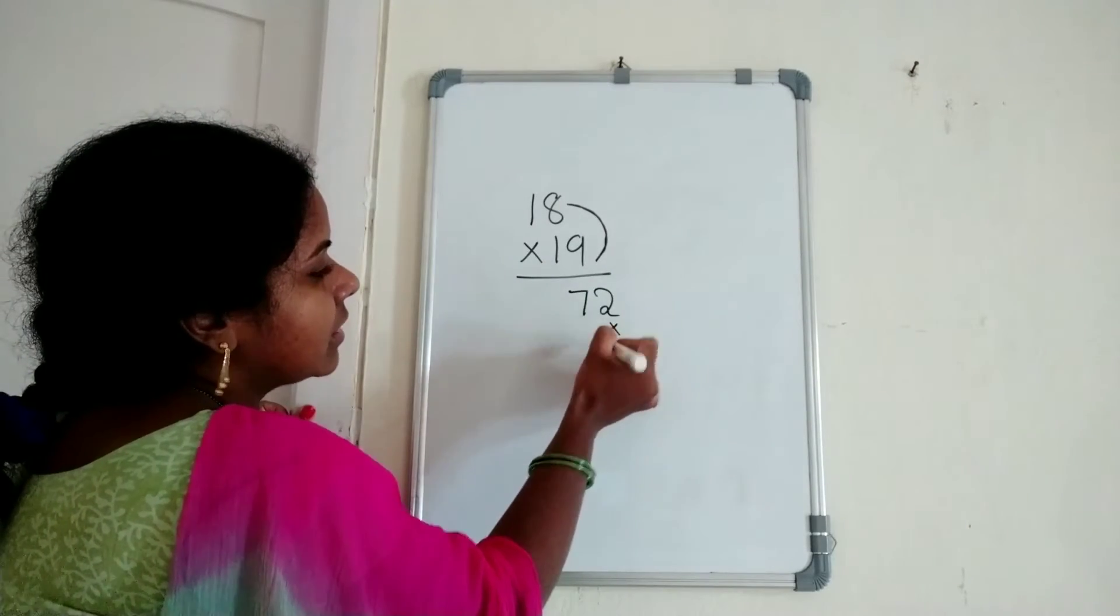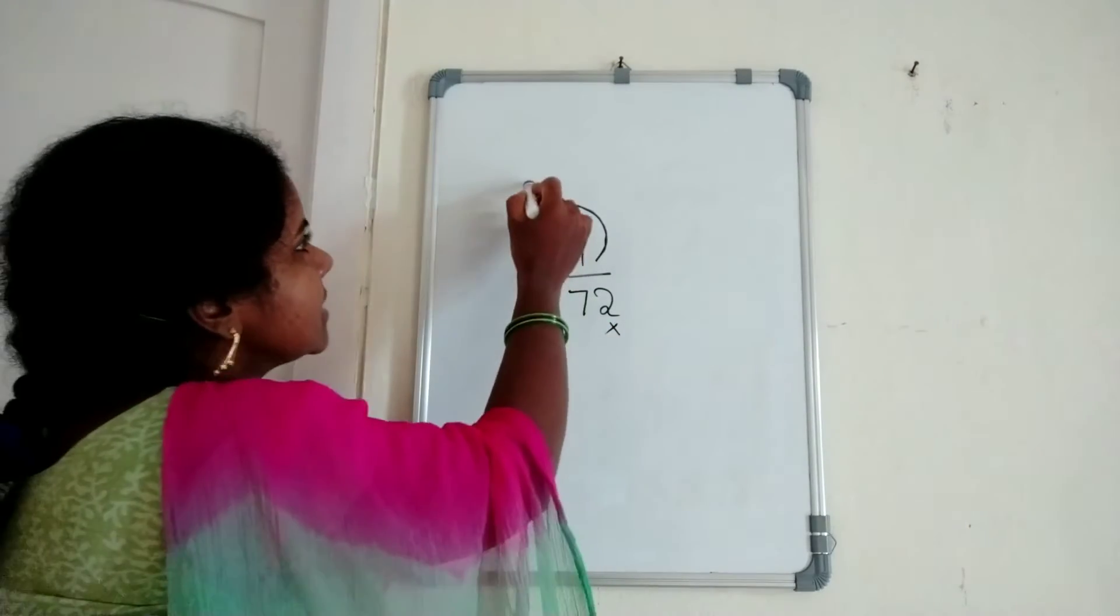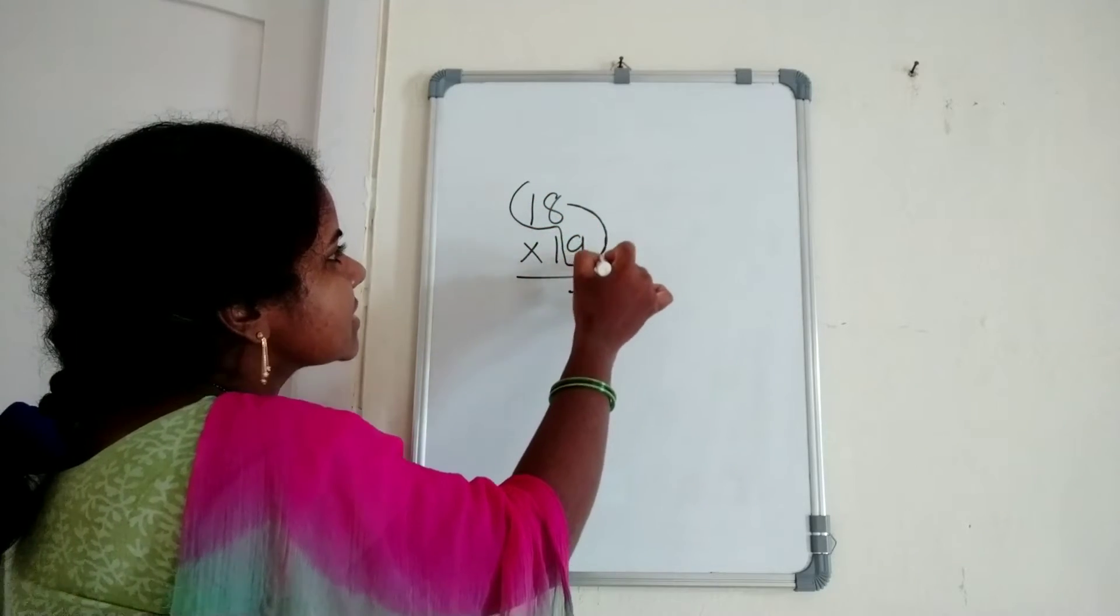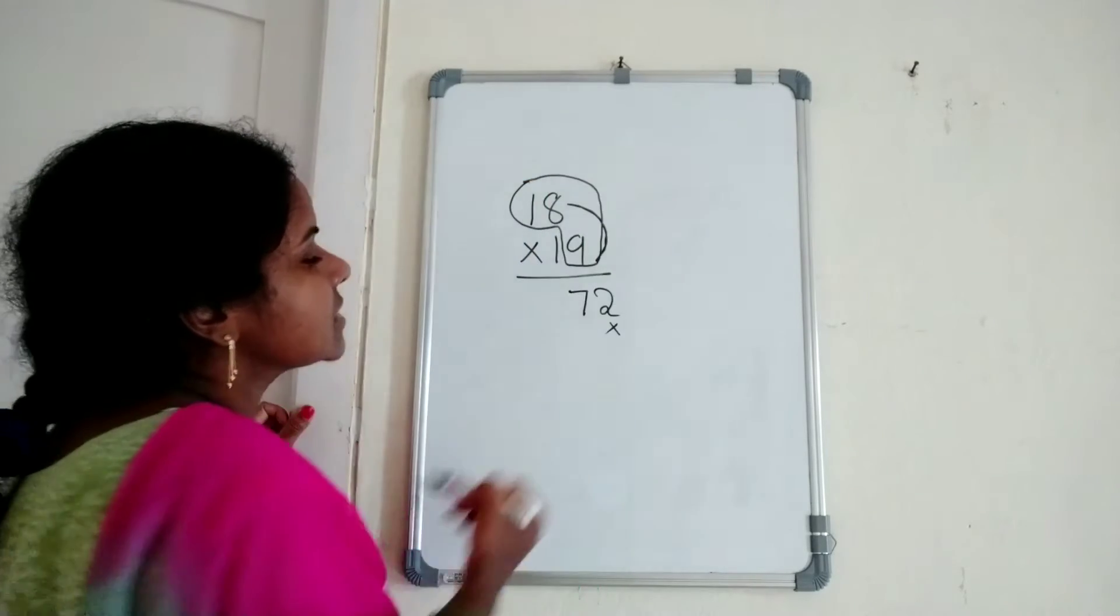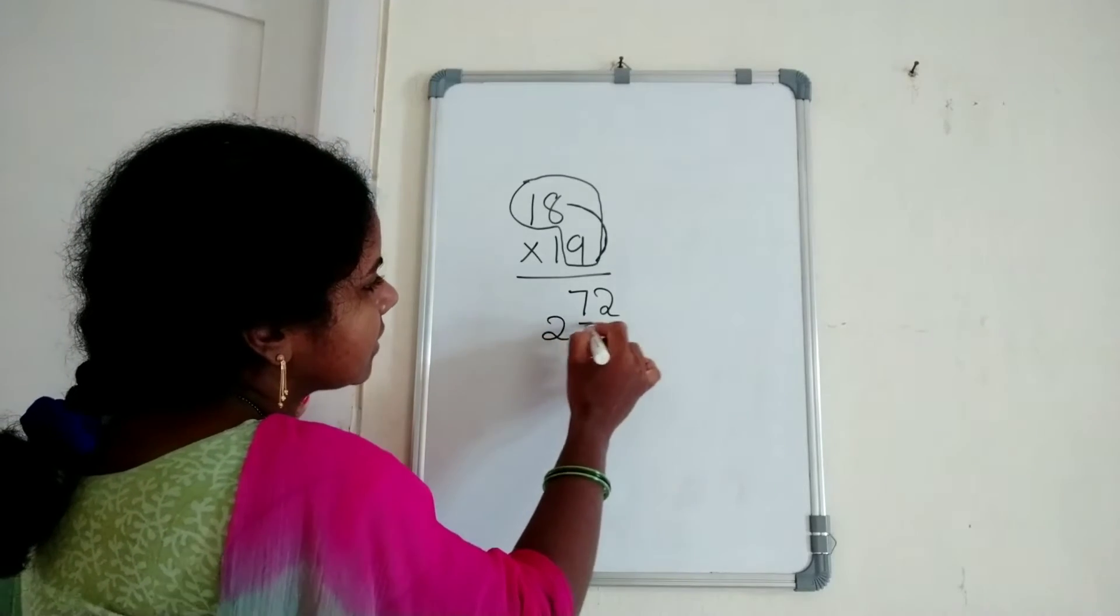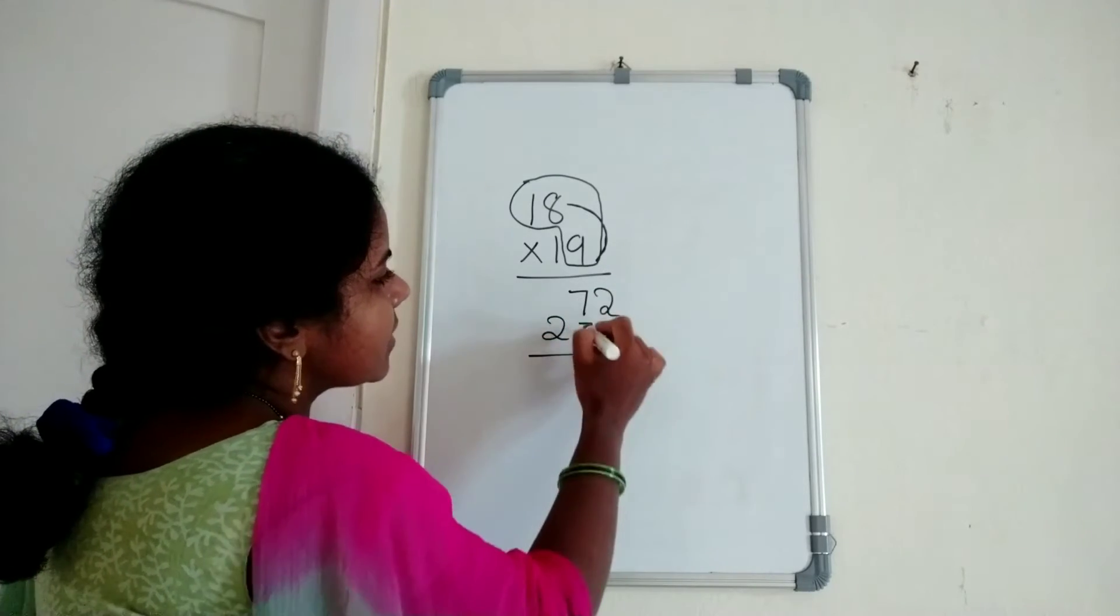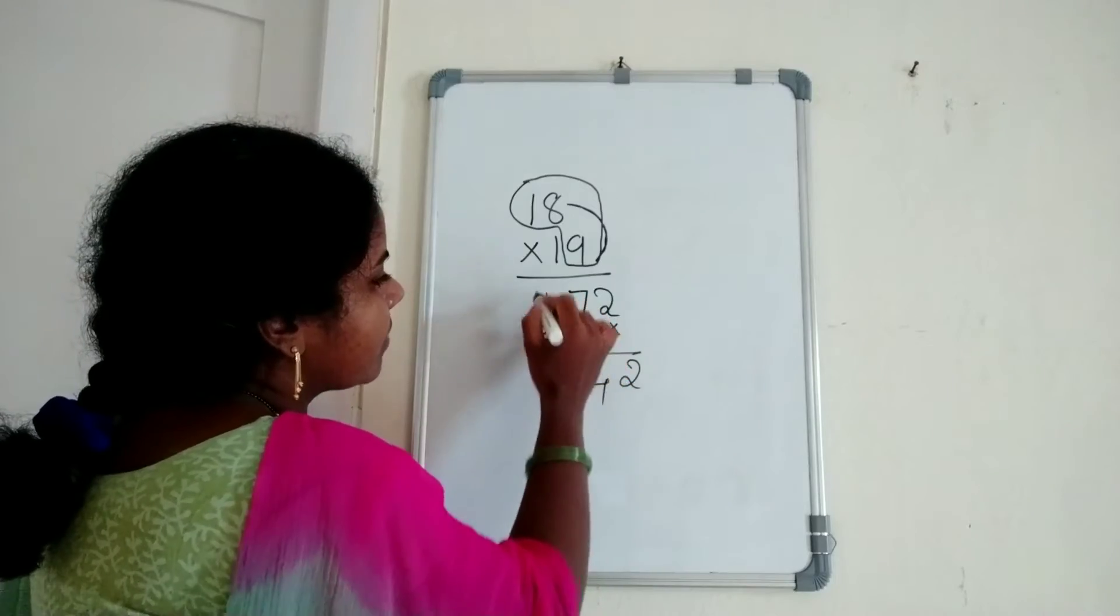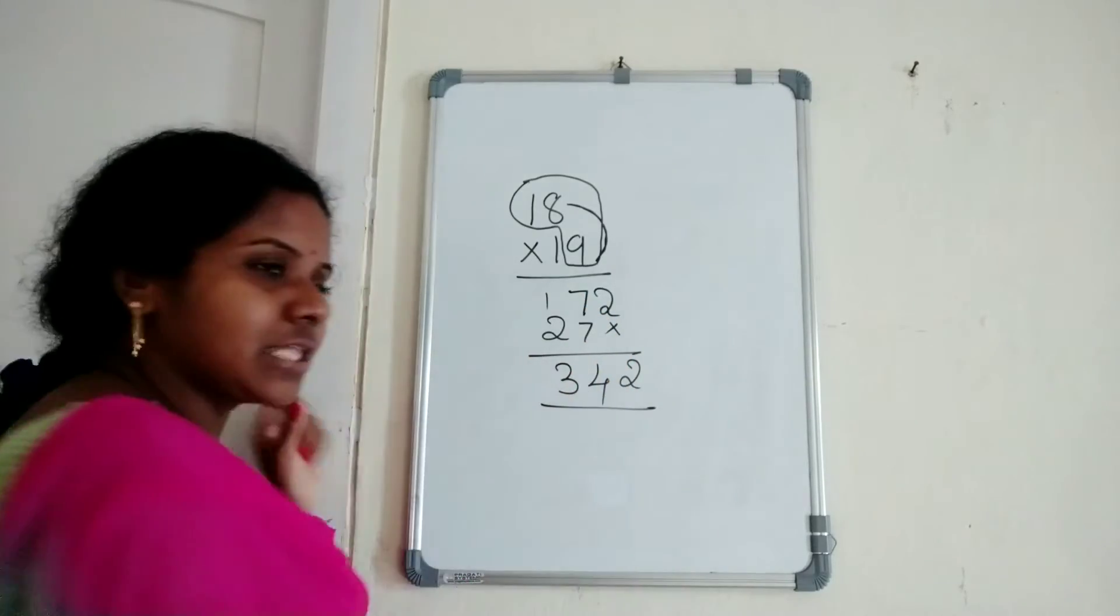Now leave the ones place number. Just add 18 plus 9. 18 plus 9 is 27. Next, 7 plus 7 equals 14, then 2 plus 1 equals 3. The answer is 342. Got it?